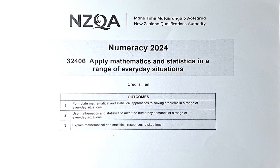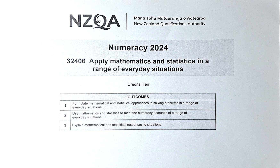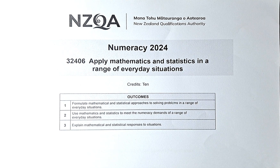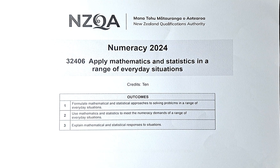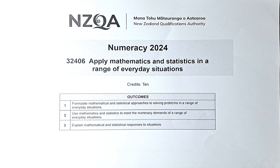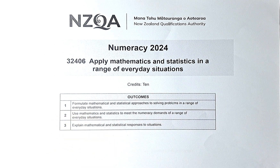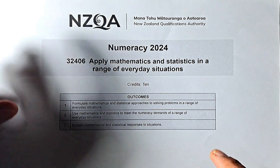Good day and welcome to the last video of the 2024 June numeracy exam papers called Apply Maths and Stats in a Range of Everyday Situations. The paper number is 32406 and this is a unit standard, meaning you either get achieved or not achieved. To get achieved, or 10 credits, you need to fulfill outcomes 1, 2 and 3. This video will cover outcome 3.